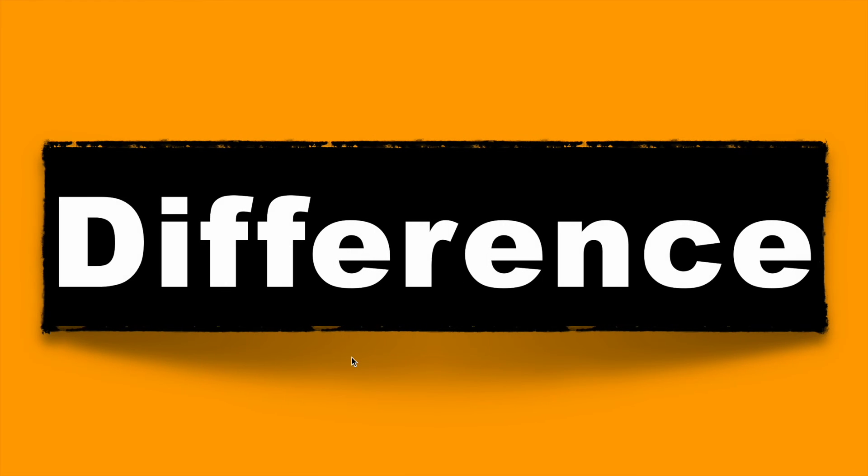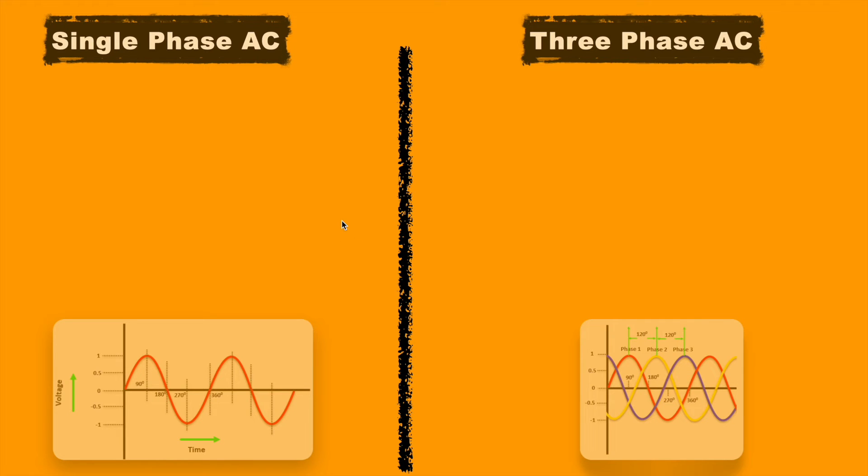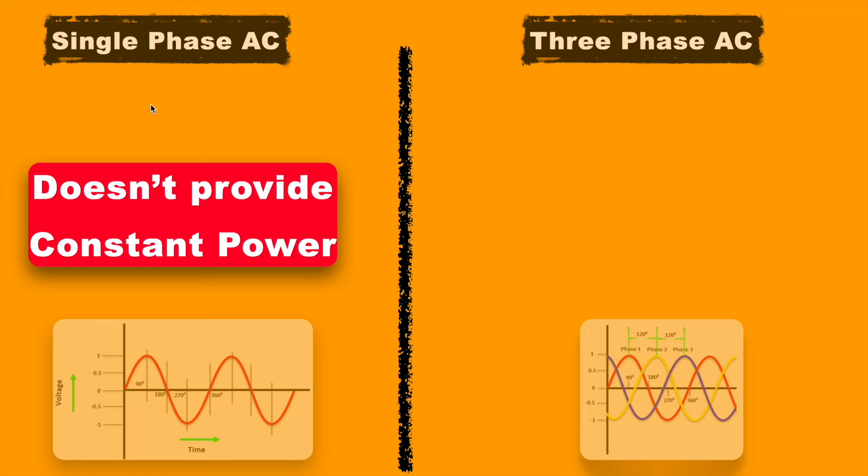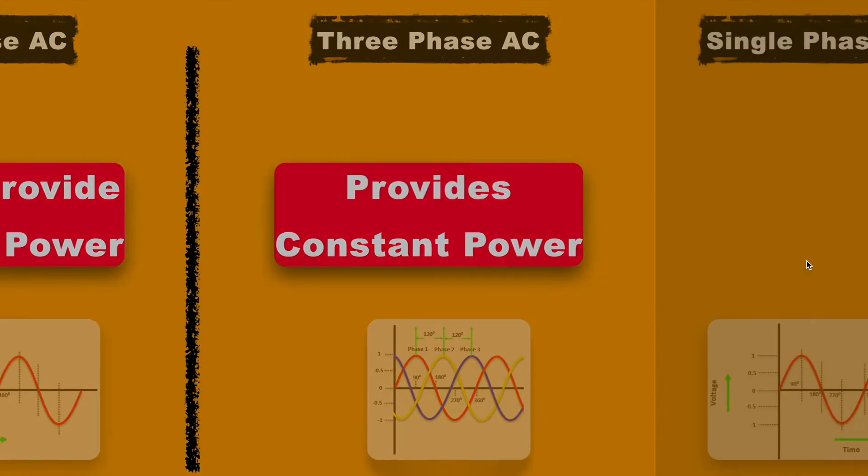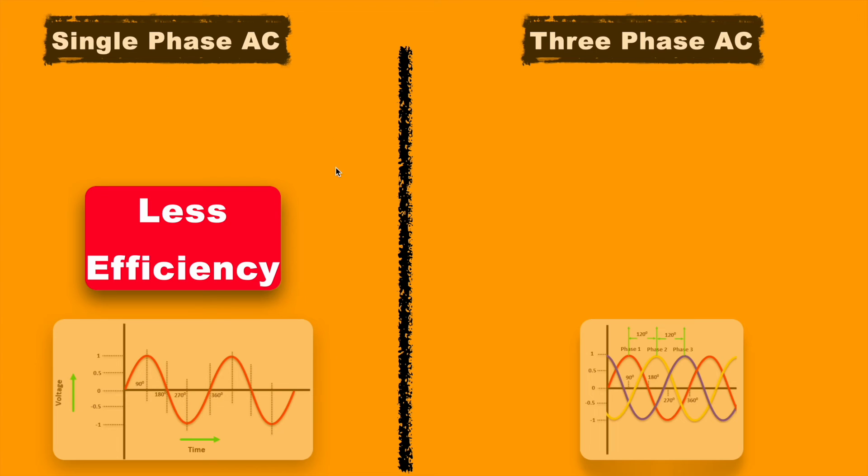Now let's see the differences between both. The very first difference and the main difference is single phase power supply doesn't provide constant power to the load, while a 3 phase power supply can provide constant power. The second difference: single phase power supply is less efficient compared to the 3 phase power supply.